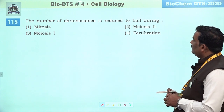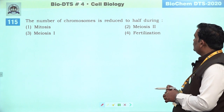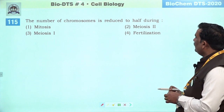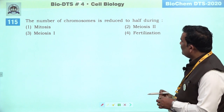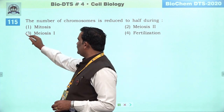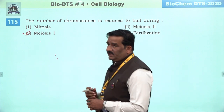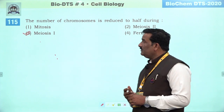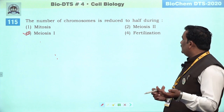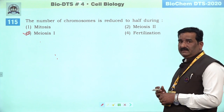Next question: the number of chromosomes is reduced to half during. Number of chromosomes reduce hota hai meiosis first mein hota hai — isliye hum ise reductional division bhi kehte hain. Third is the right answer.